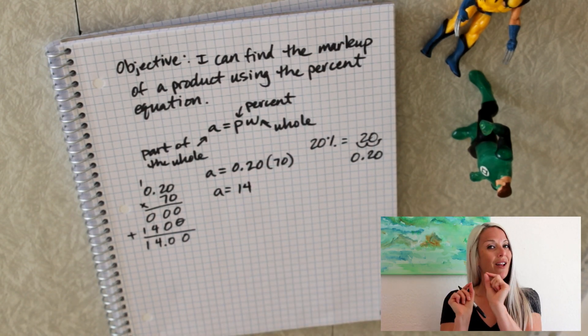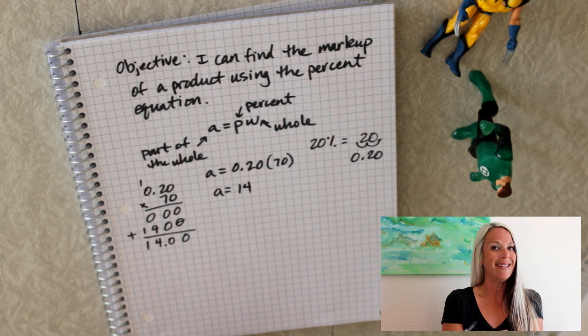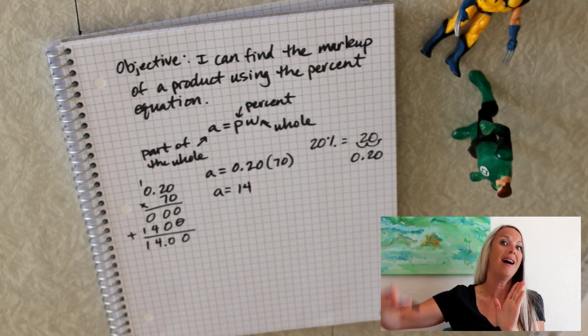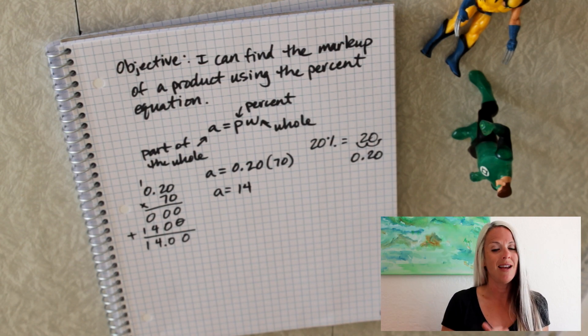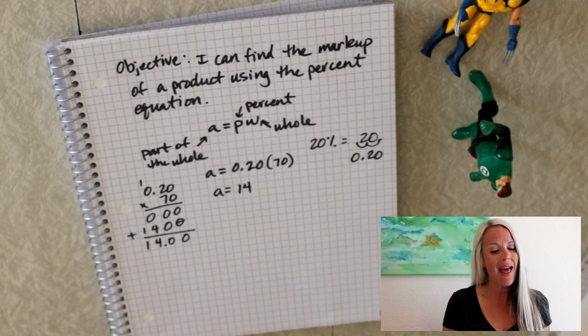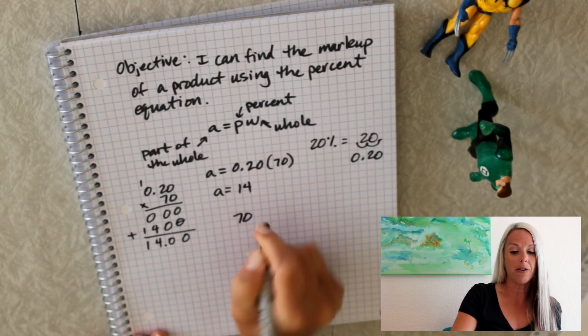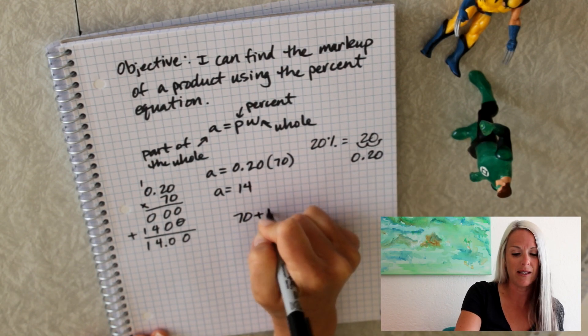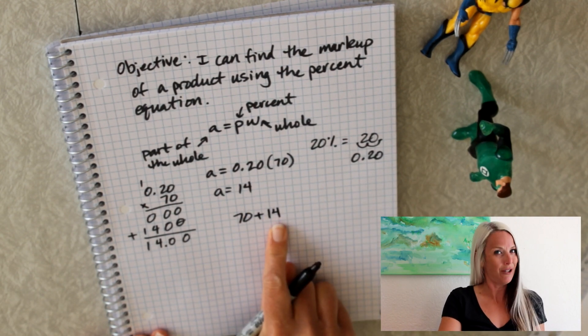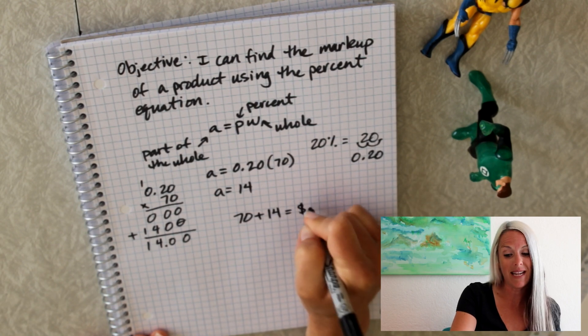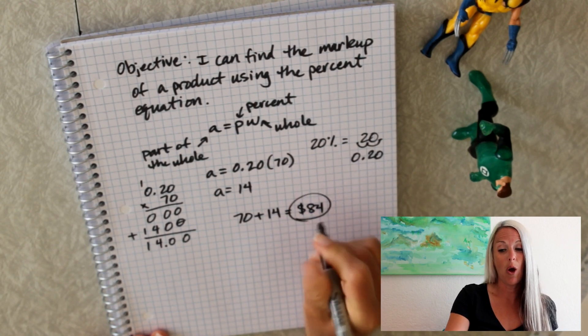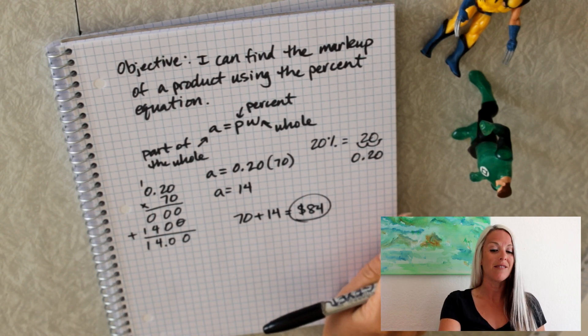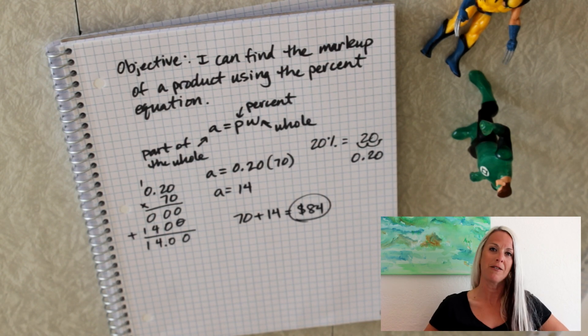Now Logan's not going to discount the bike by 20%. He's going to mark up the cost of the bike by 20%. So he's going to sell it to Hal over here for $70, the price Logan bought the bike for, plus 20%, which is $14. And turns out he's going to try and see if Hal will buy this bike for $84.